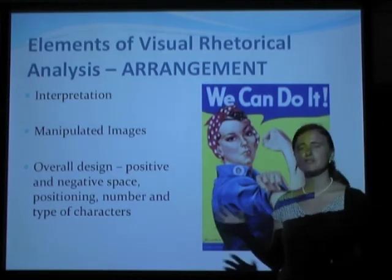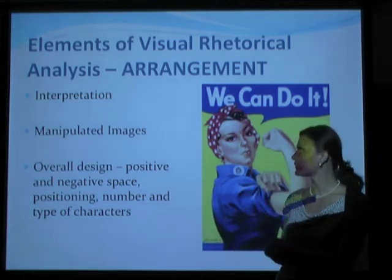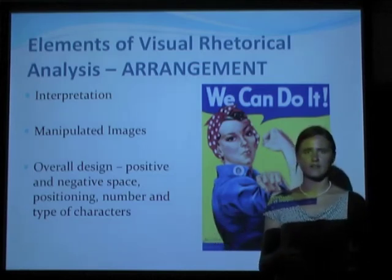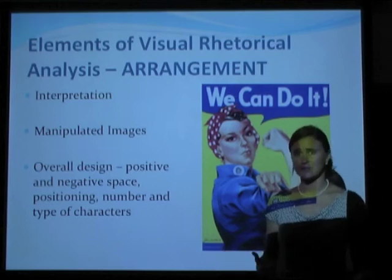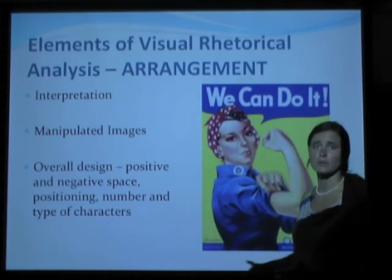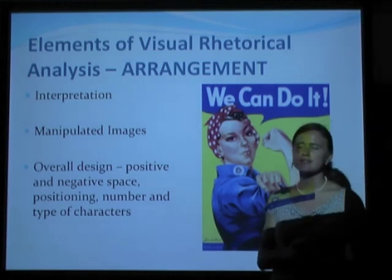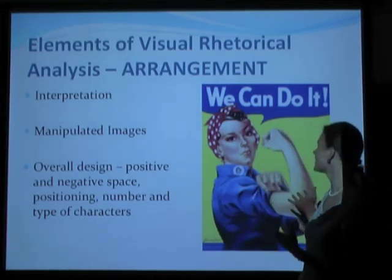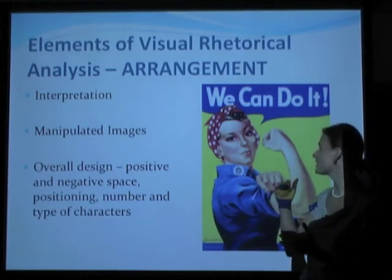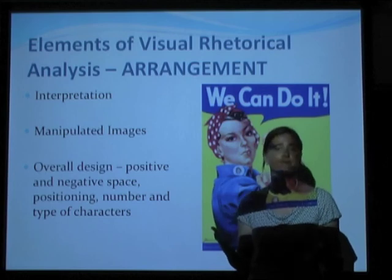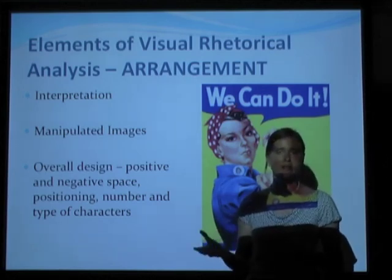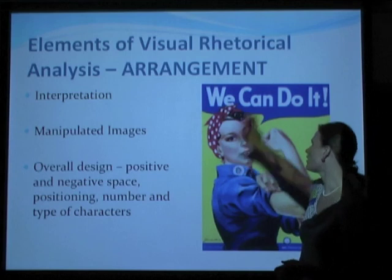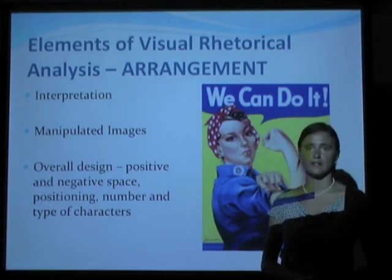Interpretation is important here. We've been doing lots of interpretation as we look at Rosie the Riveter, and it's important to note that all of these elements suggest ideas, and they might suggest different ideas based on the characteristics of a particular audience. Interpretation is always something that's going to be at work when we're doing visual rhetoric. Manipulated images are more popular now that there are CGI effects and many different ways to make videos. It's important to keep in mind when you analyze visual rhetoric that people can twist images to make them say particular things in particular ways. Thinking about the overall layout and design of the piece, including positive and negative space, is also important when determining what argument it's trying to make.